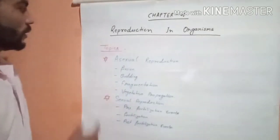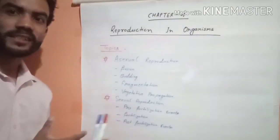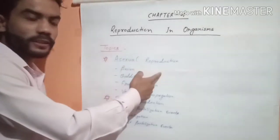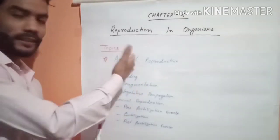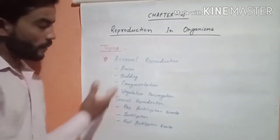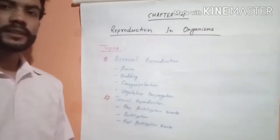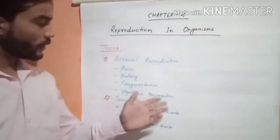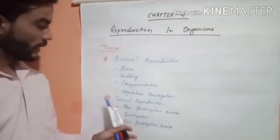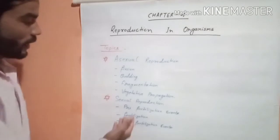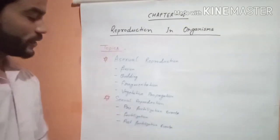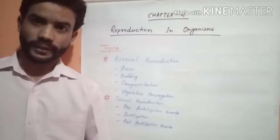Some topics to be covered in this lesson: the most important topics are asexual reproduction, and in this topic we will also discuss fission, budding, fragmentation, vegetative propagation, and then sexual reproduction, pre-fertilization events, fertilization, and post-fertilization events.